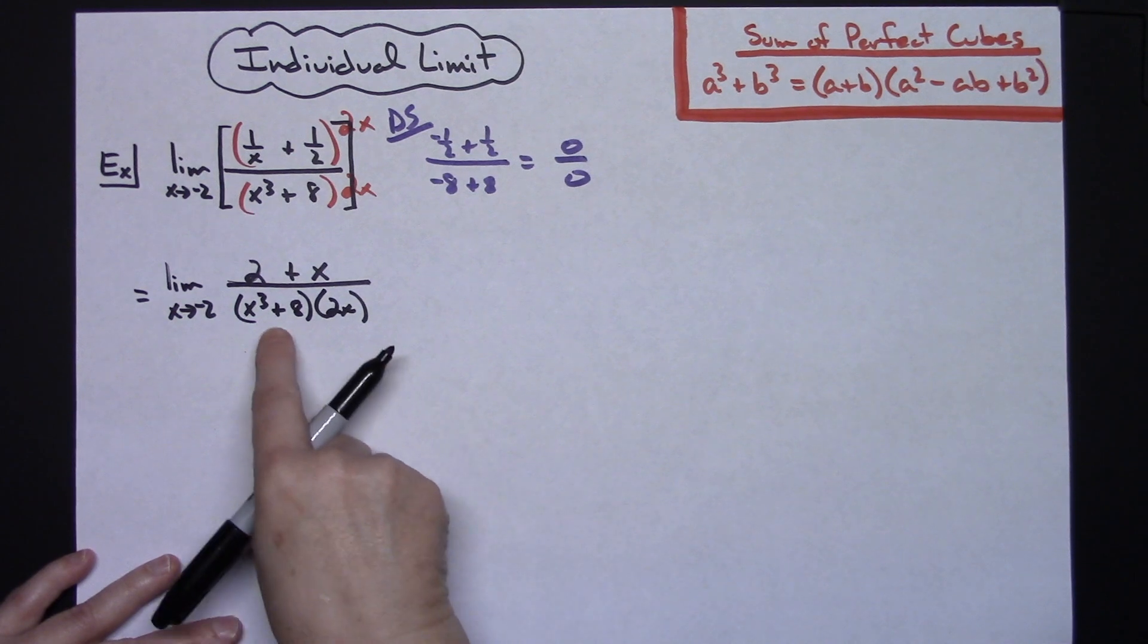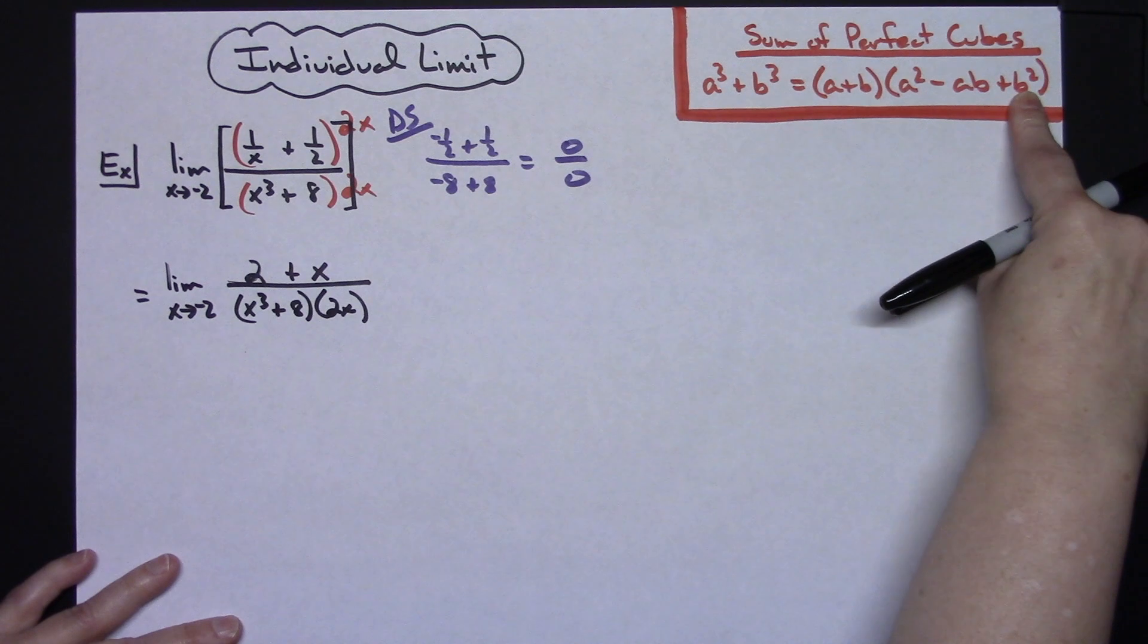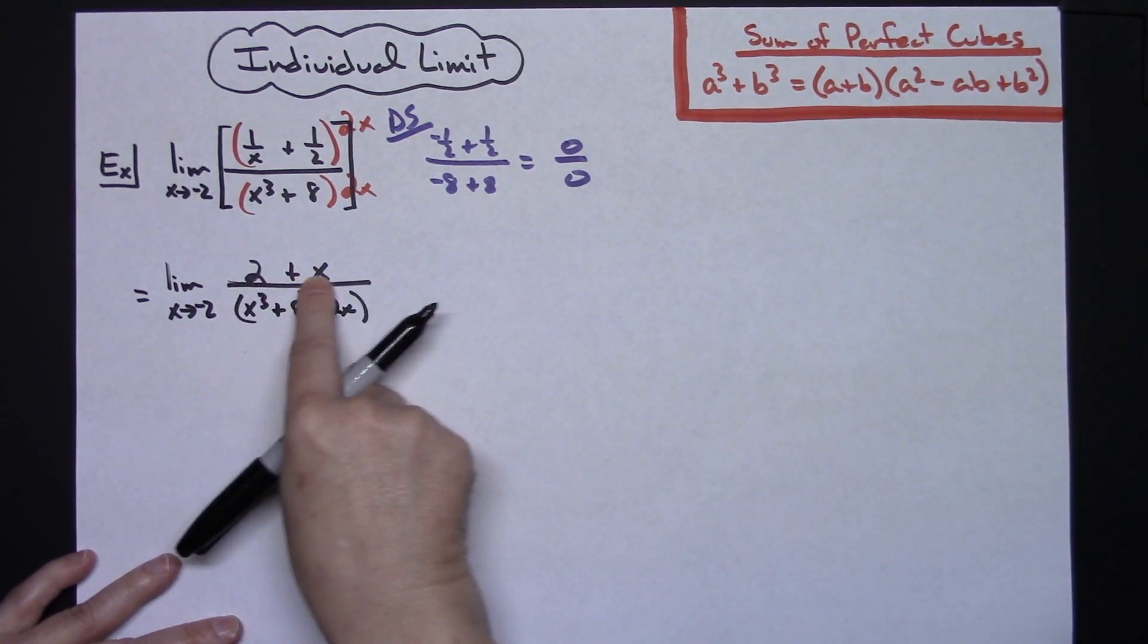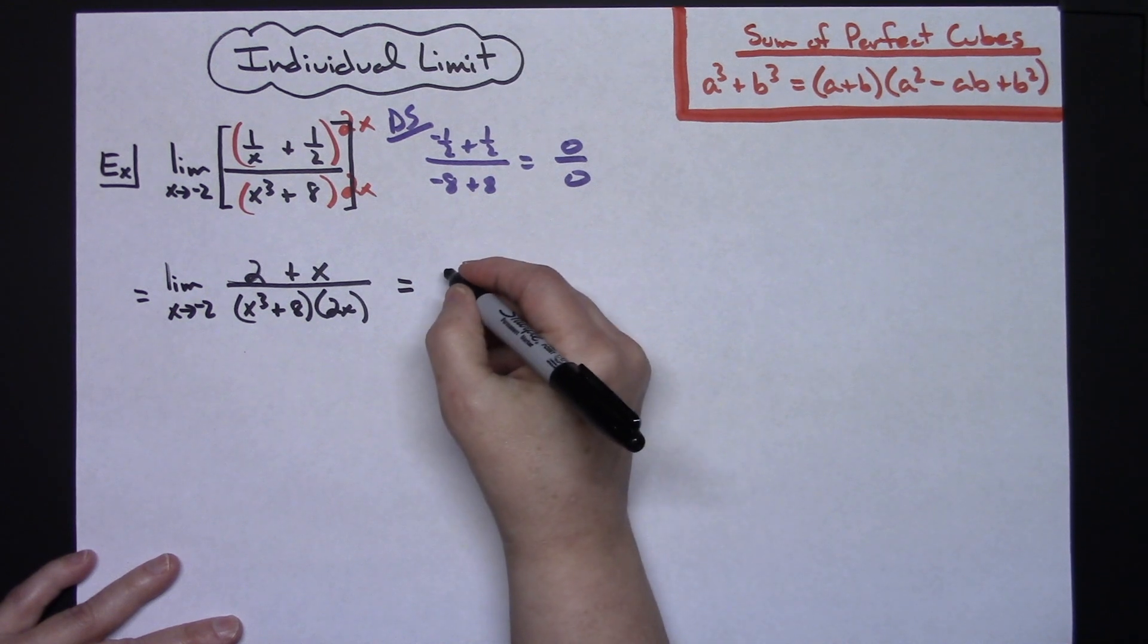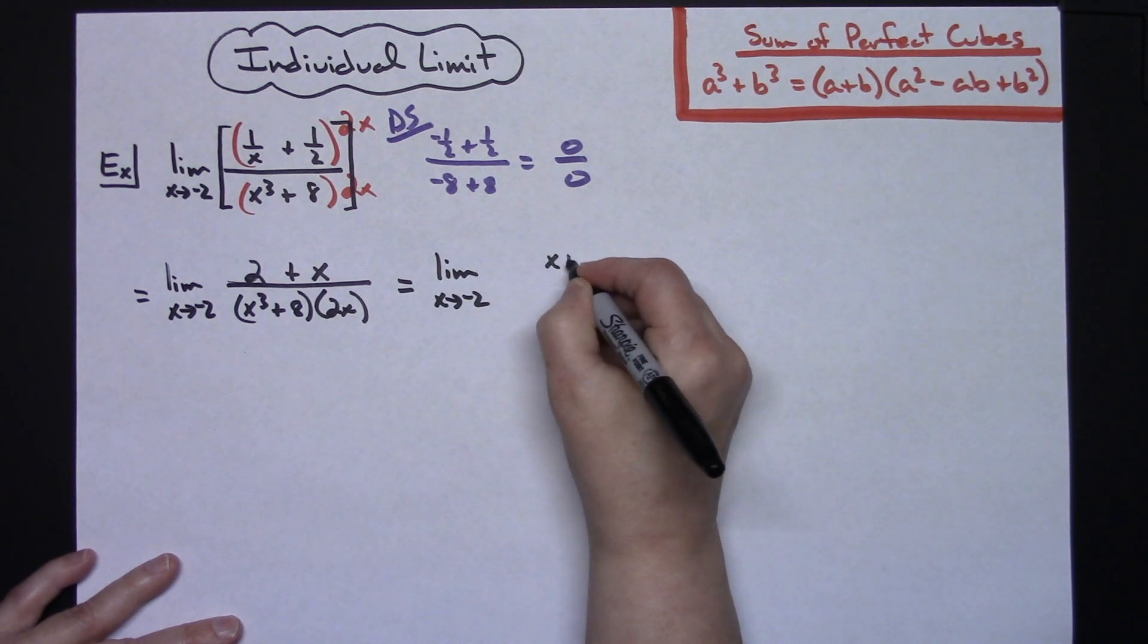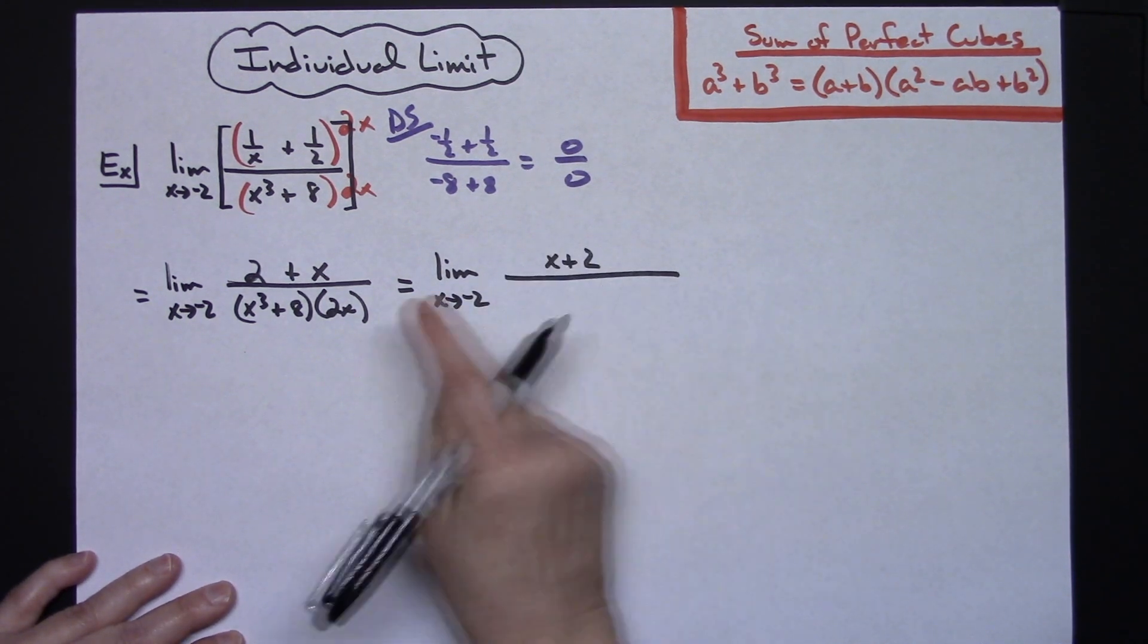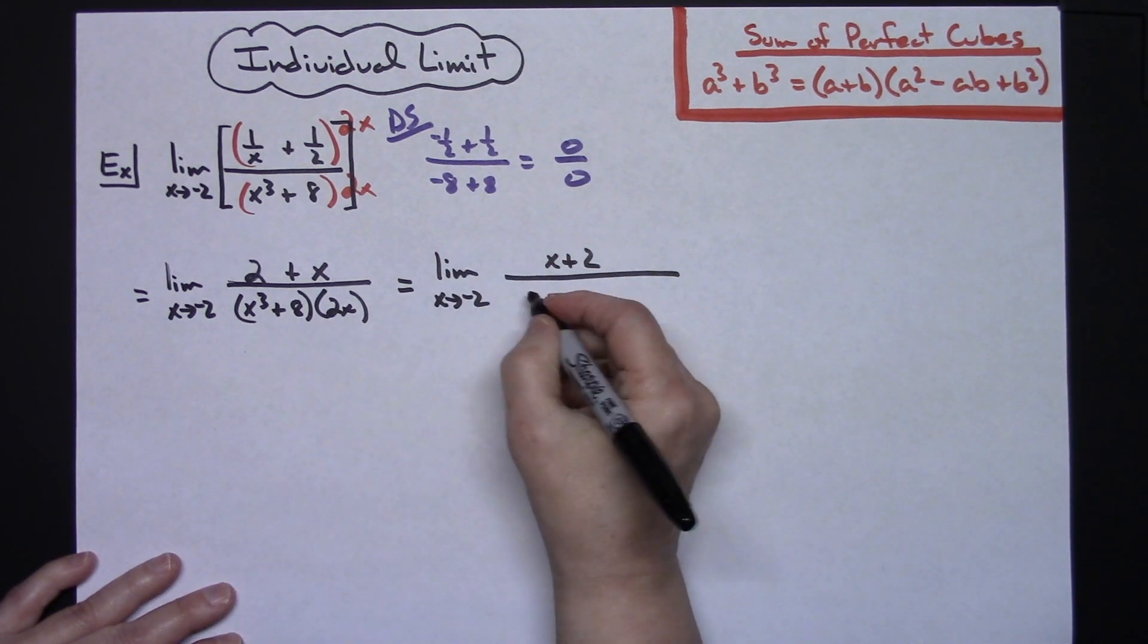Continuing on with some algebra steps, the only thing I can do here is I can factor this according to this formula. I will probably automatically go ahead and rewrite that, so I've got x plus 2 on the top. We'll have the limit as x approaches negative 2; on top I'm going to have the x plus 2.